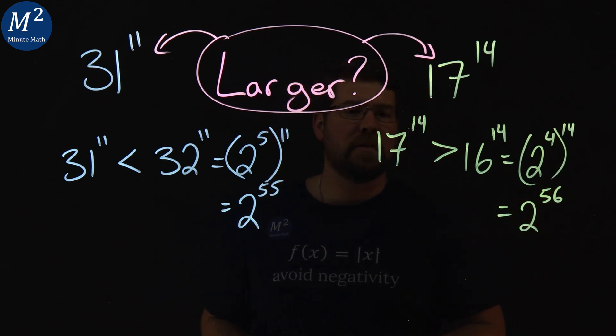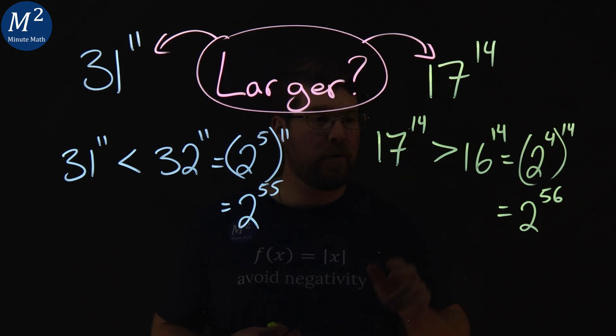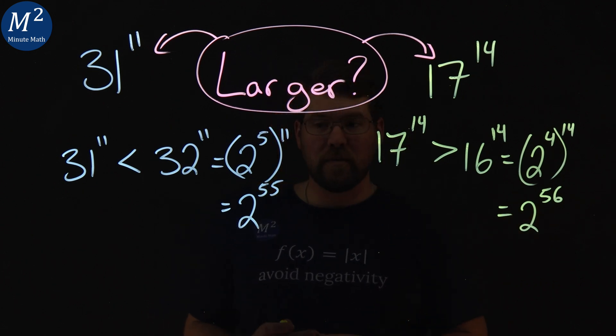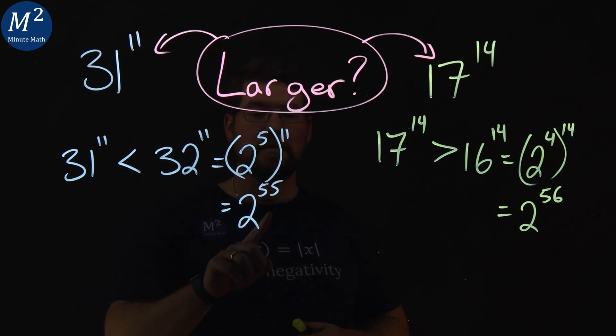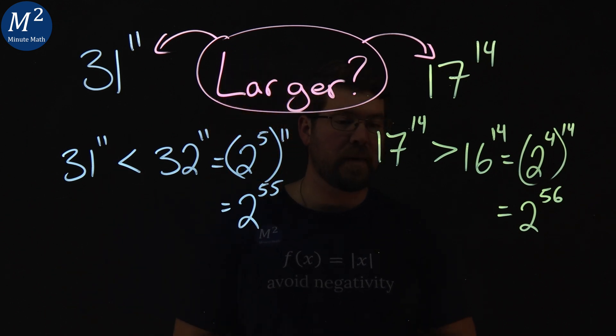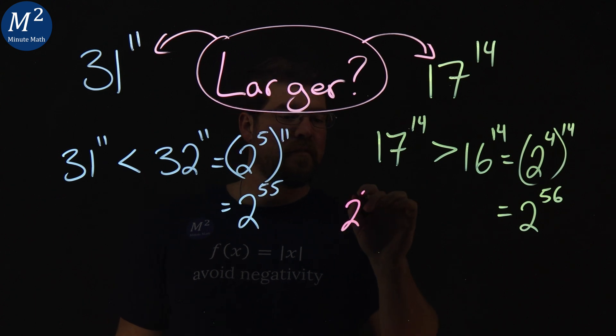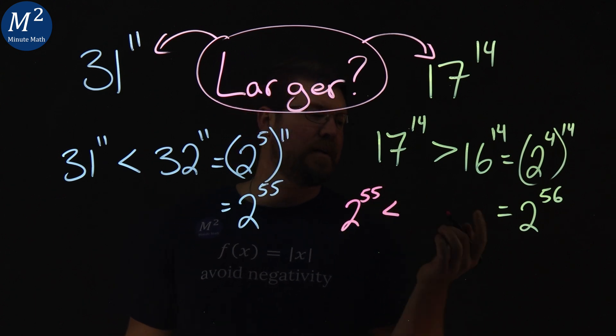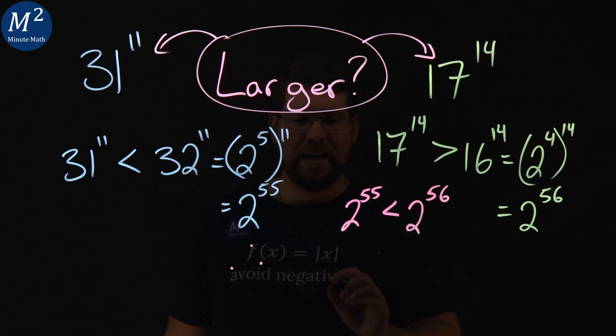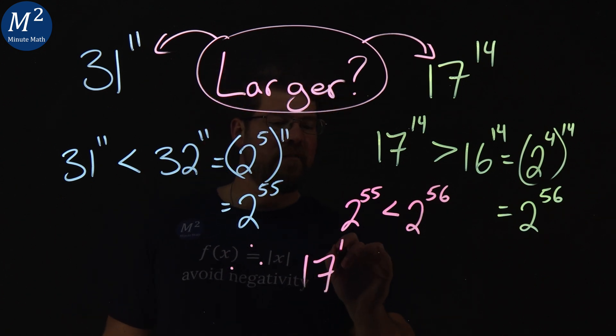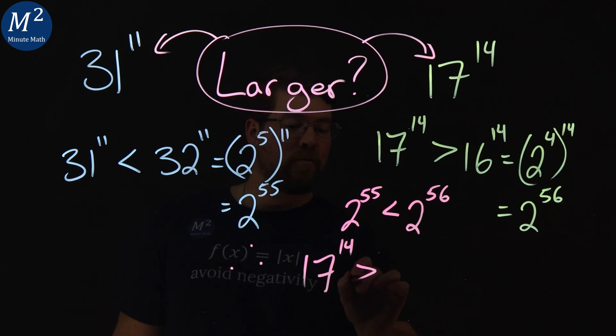So what that tells us here is that 17 to the 14th power is greater than 2 to the 56th power, and 31 to the 11th is less than 2 to the 55th power. Since 2 to the 55th power is less than, clearly, 2 to the 56th power. Therefore, we can state that 17 to the 14th power is greater than 31 to the 11th power.